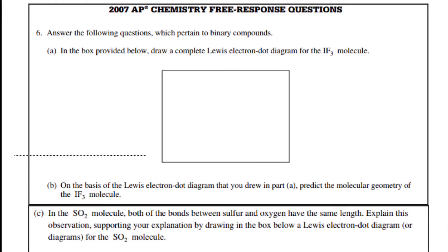In this video, we're going to take a look at question number 6 from the 2007 AP Chemistry Test. And in part A, it says, in the box provided, draw a complete Lewis electron diagram for the IF3 molecule.